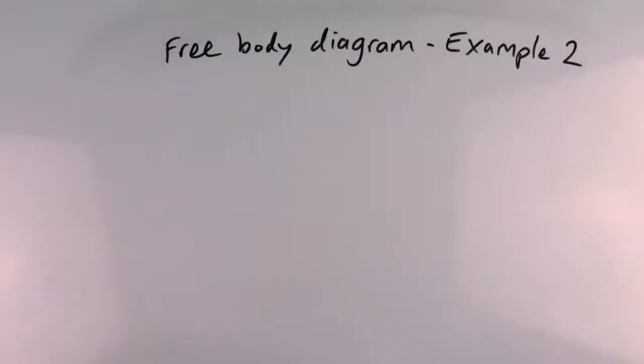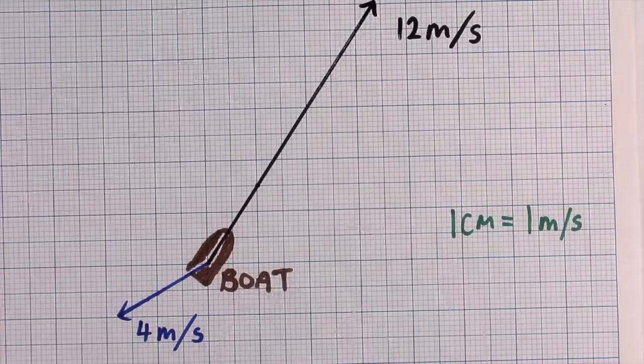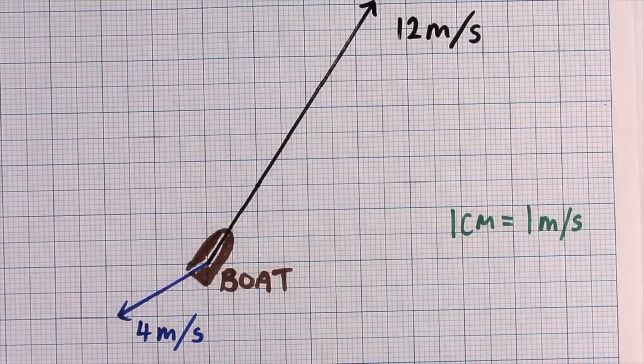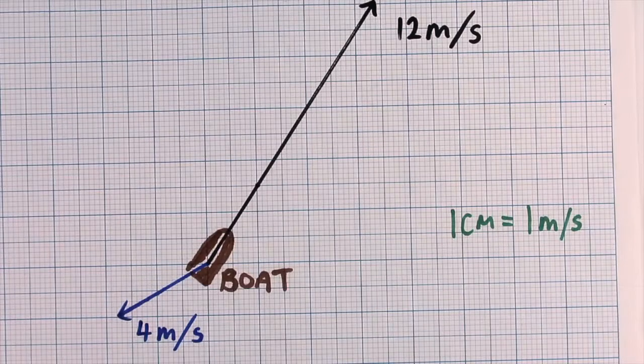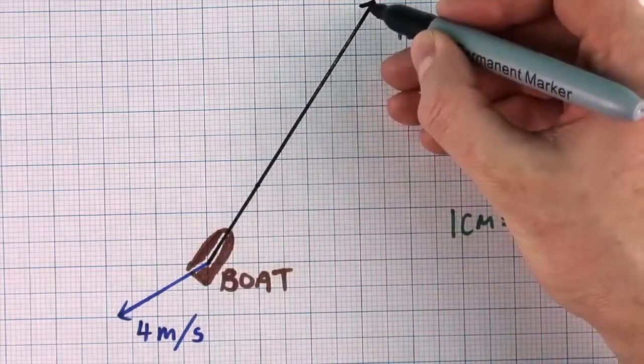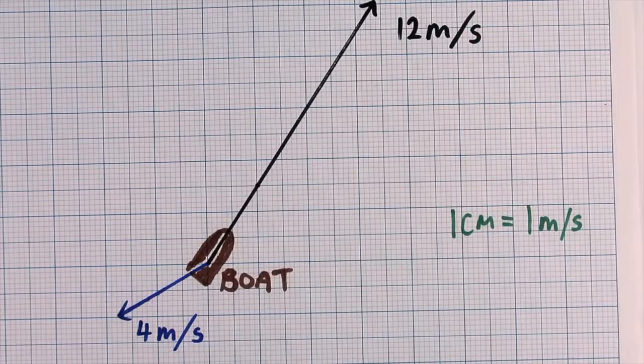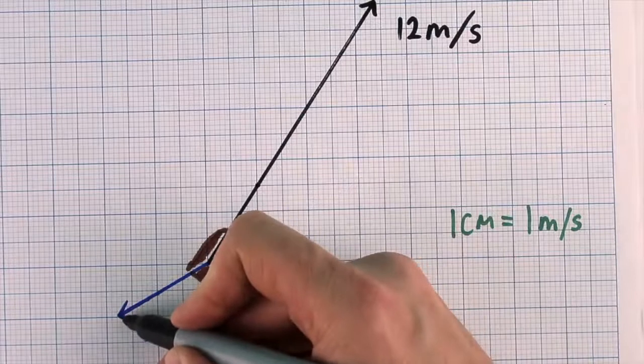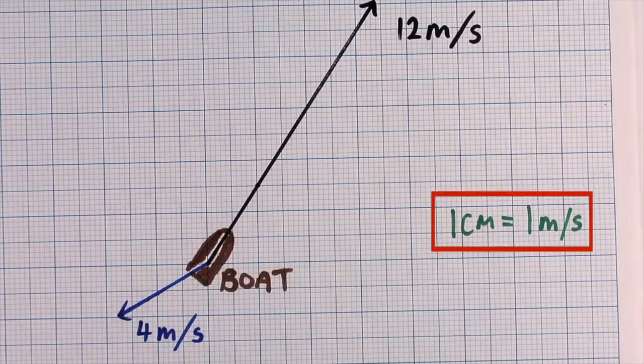Here's another example. Velocity is also a vector. It has size and direction. So we can use vector diagrams to work out resultant velocities. Examiners often draw these questions on graph paper for you to complete. Here's a boat travelling at 12 meters per second in this direction. And here's a current in the water travelling at 4 meters per second in this direction. We'll use a scale of 1 centimeter equals 1 meter per second.